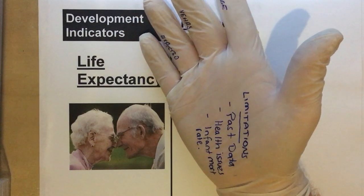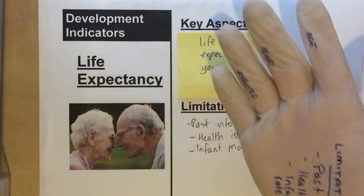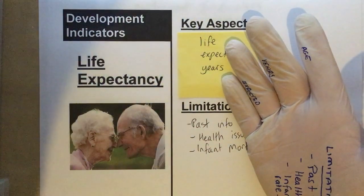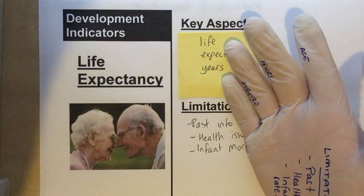Thank you for watching today. That was Development Indicators: Life Expectancy on White Glove Geography.